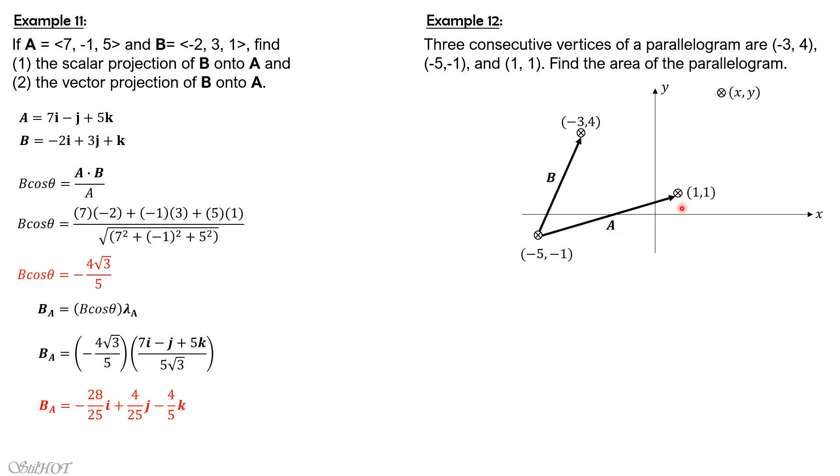So vector a is equal to (1 - (-5))i plus (1 - (-1))j. So that's the area, the magnitude of the cross product between vectors a and b. So vector a is (1 - (-5))i plus (1 - (-1))j, so it is 6i plus 2j.